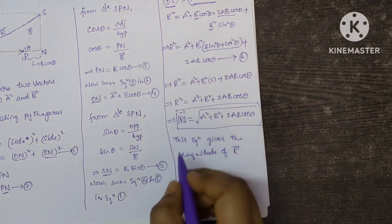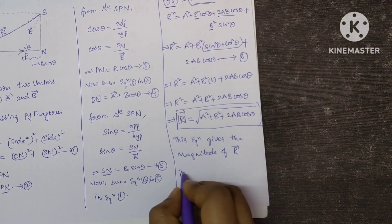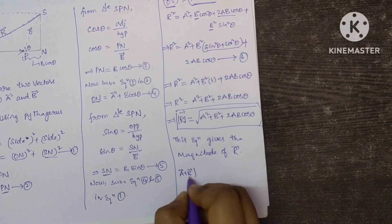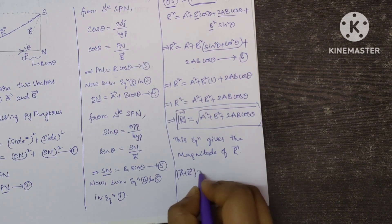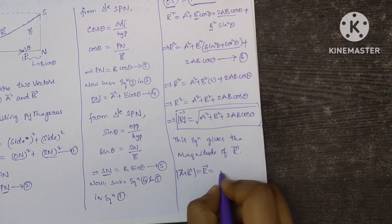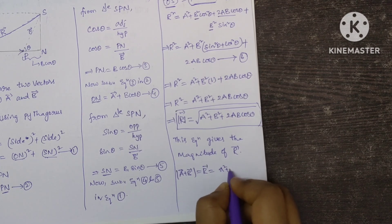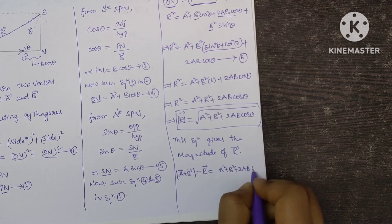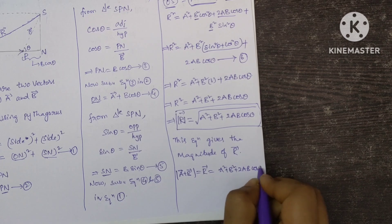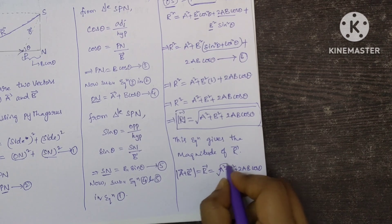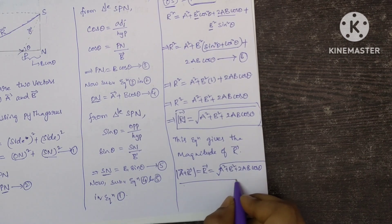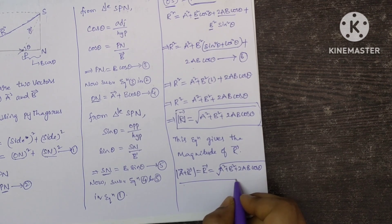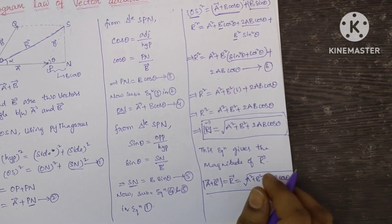So this can also be written as the magnitude of A bar plus B bar, which equals R bar = √(A² + B² + 2AB cos theta). This is the magnitude of the resultant vector.